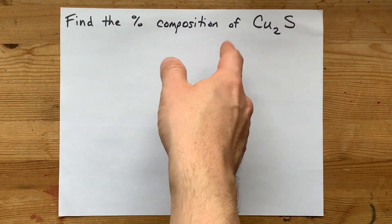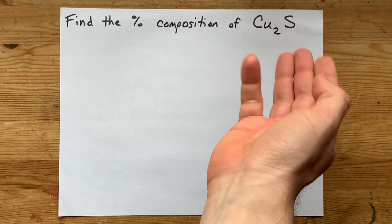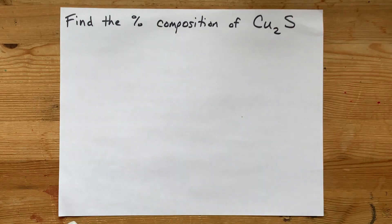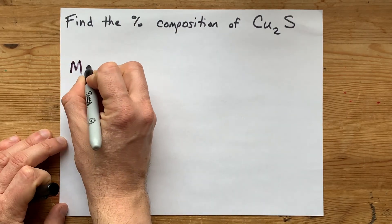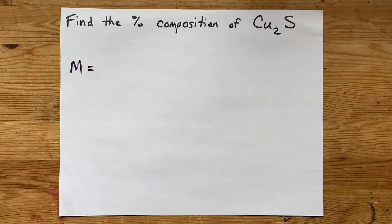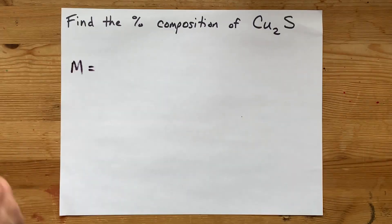Let's find the percent composition of Cu2S, with the name copper-1-sulfide. Step one for percent composition problems is to find the molar mass of the compound itself.